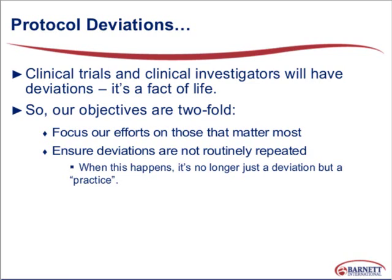Knowing that deviations are going to occur, I think we need to look at our practices and what we can do to prevent those deviations. One thing I always look at is how well my protocol is written — so is it clear — as well as the instructions that I've provided to my investigative sites. Do my sites understand this protocol? Typically when individuals may not understand the protocol, or if we are asking the investigative site to perform tasks or duties that are outside of standard of care in the clinical trial — which that often will happen — and this has not been identified by the investigative site, deviations are going to occur.